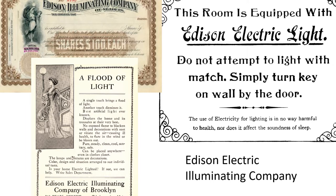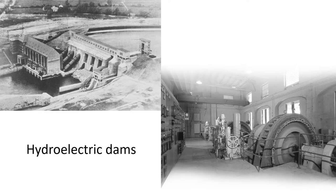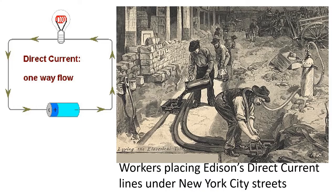Edison started the Edison Electric Illuminating Company. One of the reasons that people like Edison could find practical uses for electricity was they invented ways to create that power source. In the late 19th century, Charles Parsons invented a steam turbine which was able to produce electricity, and they also got electricity from hydroelectric dams. Here you see a picture of Edison's Illuminating Company laying power lines in New York City for his first customers. The power source that Edison used was direct current, which meant electricity would go straight from the steam turbine or hydroelectric dam directly to the consumer.